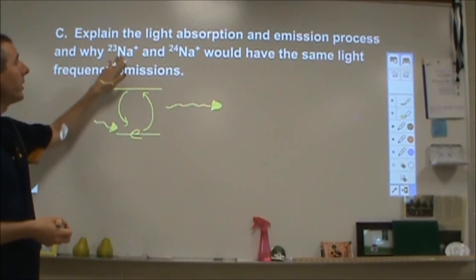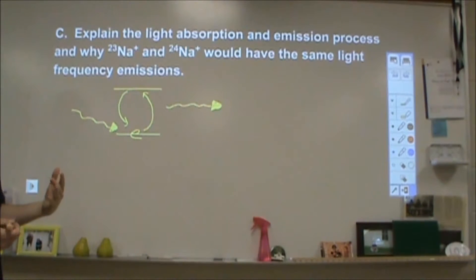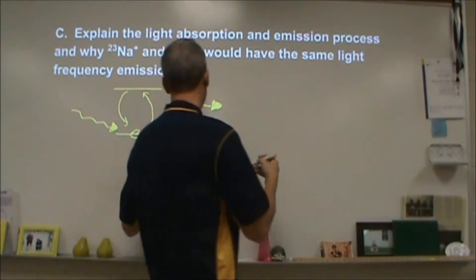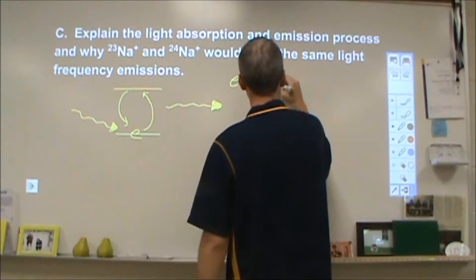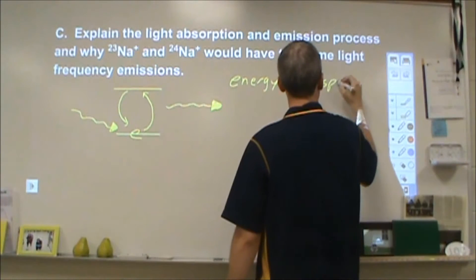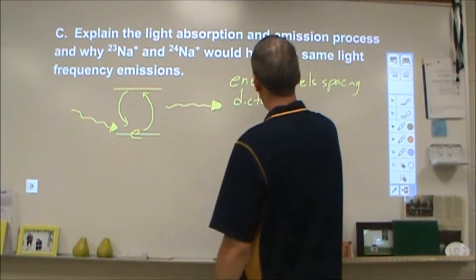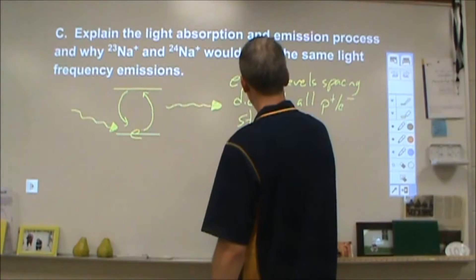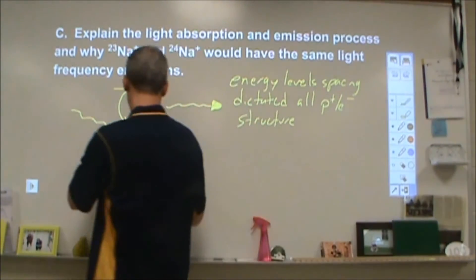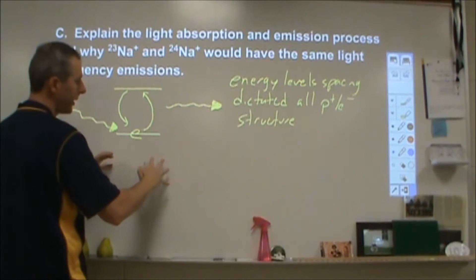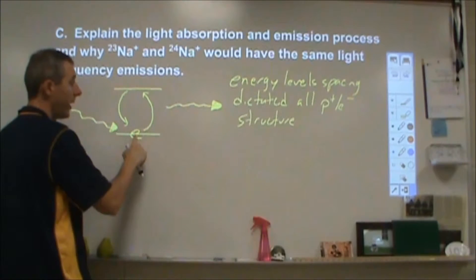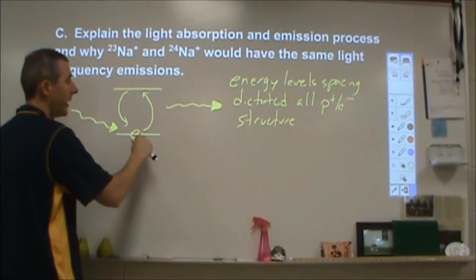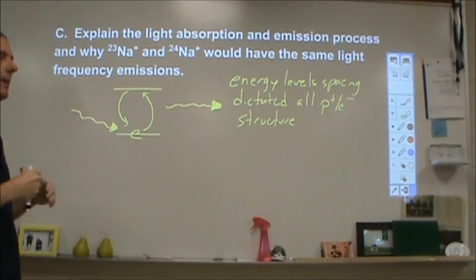So the question is why would 23 sodium plus and 24 sodium plus have the same light frequency emissions? Why would they both absorb the same yellow light or the same green light? And the answer is because these energy levels and their spacing is dictated by all of the protons and electrons and their structure within the atom.